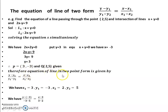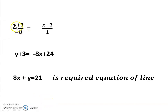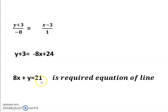Using the two-point form: y minus y1 over y1 minus y2 equals x minus x1 over x1 minus x2, with x1 equals 3, y1 equals minus 3, x2 equals 2, y2 equals 5. We get y plus 3 over minus 8 equals x minus 3 over 1. Cross-multiplying: y plus 3 equals minus 8x plus 24. Rearranging: 8x plus y equals 21.